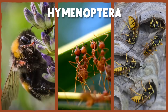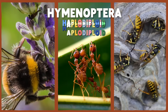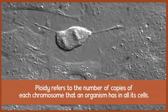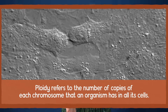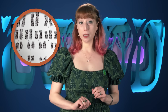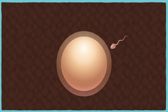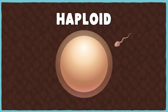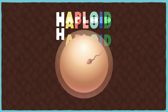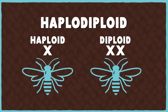Bees, like all other members of the insect order Hymenoptera, including ants and wasps, are what's called haplodiploid. Ploidy refers to the number of copies of each chromosome that an organism has in all its cells. For example, we humans have two copies of all of our chromosomes, one copy from each parent, which makes us diploid. Our reproductive cells each only have half the total copies, and we call them haploid. When they come together during mating, they make one whole diploid set of the information necessary to make you.